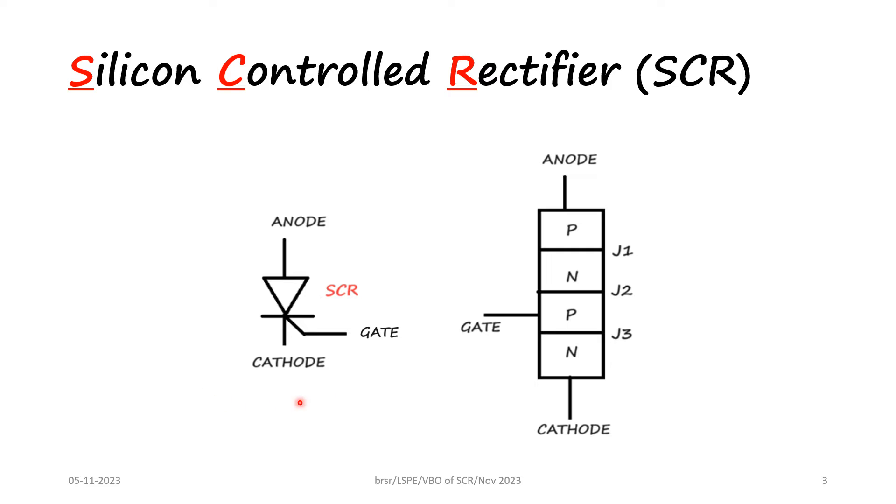We know that SCR has three terminals: anode, cathode, and gate, and it has four layers PNPN, three junctions J1, J2, and J3.